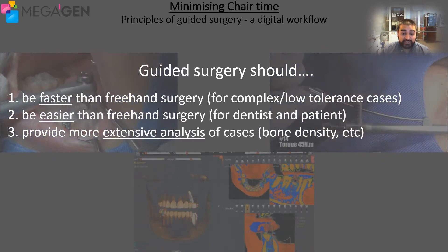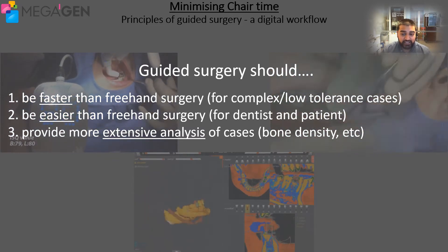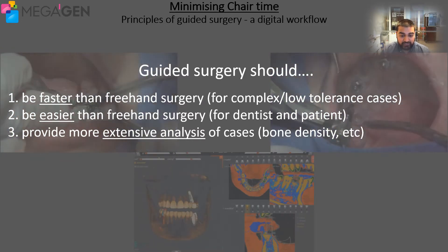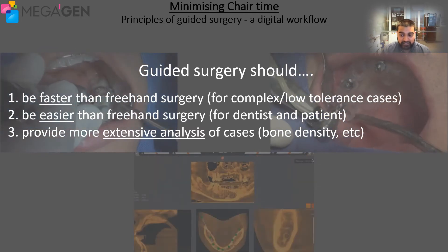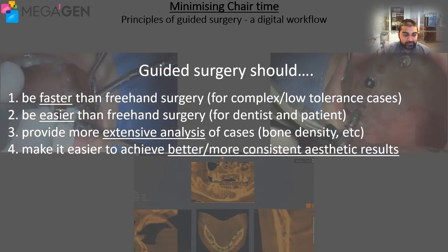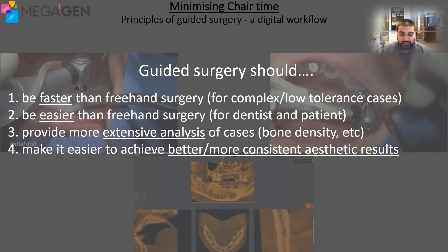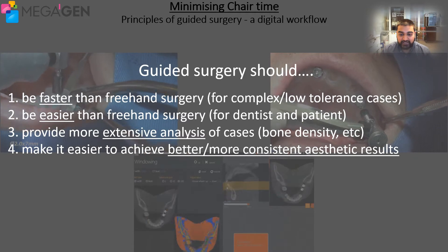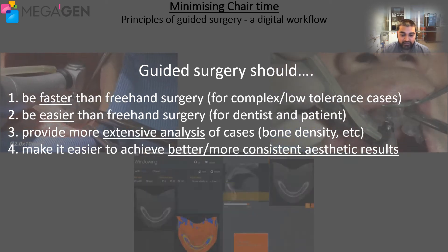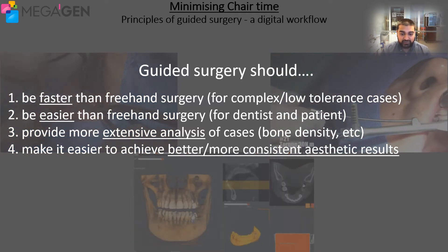Guided surgery should also provide more extensive analysis of cases. A CBCT is digital information, and because of that it can be modified to better suit our needs. One of the ways it can be modified is to actually calibrate the Hounsfield units to match that of the patient's actual bone quality. This means that we can judge the patient's bone quality and then be more prepared for the time of surgery. Guided surgery should also make it easier to achieve better or more consistent aesthetic results, as we can reverse engineer the implant site based on the required aesthetics.